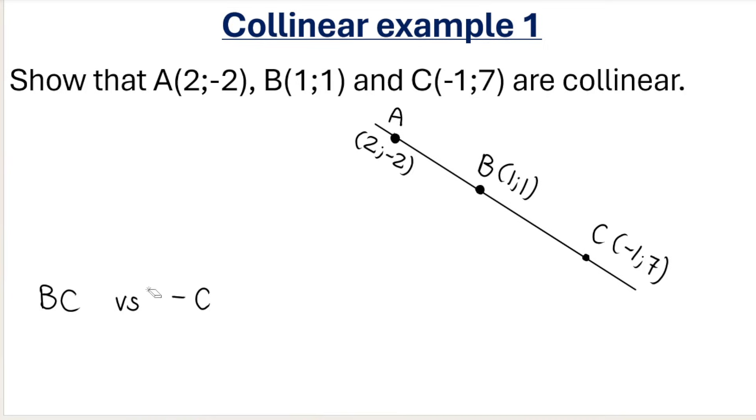Let's calculate the gradient of AB first. Remember your gradient formula: Y2 minus Y1 over X2 minus X1. It doesn't matter which one you call number one and number two. Let's call A number one and B number two. So that makes this X1 and Y1, and this X2 and Y2.